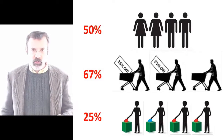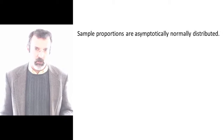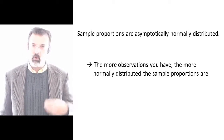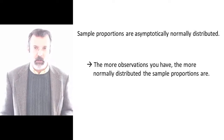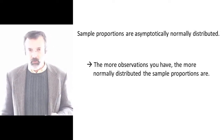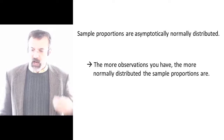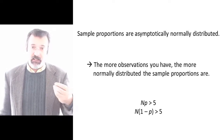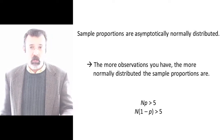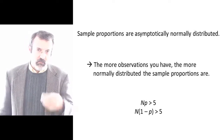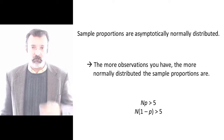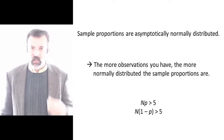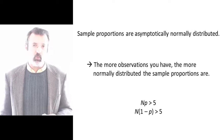Sample proportions are asymptotically normally distributed. That means the more observations we get, the more normally distributed the sample proportions are. The rule of thumb is: if you multiply the number of observations by the sample proportion, and again multiply the number of observations by one minus the sample proportion, and if both of those numbers are greater than five, then you have enough observations to assume the sample proportion is normally distributed.